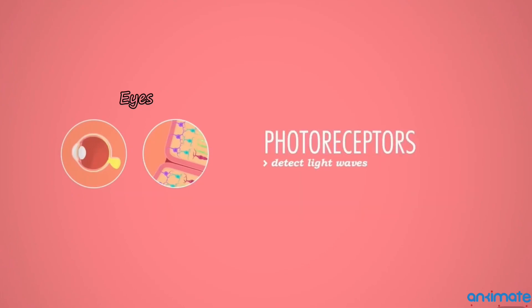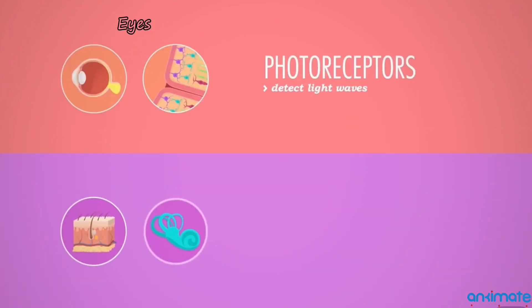We have photoreceptors in our eyes that detect light waves. We have mechanoreceptors in our skin and ears.